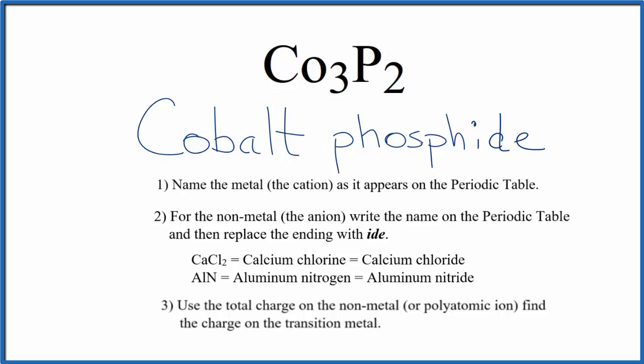We know that phosphorus forms the phosphide ion, that's three minus. So we have two times three minus, that's six minus. For our cobalt, that has to add up to six plus. Three times two plus would give us six plus. So these two numbers add up to zero, net charge of zero.